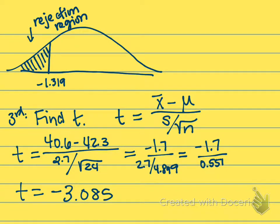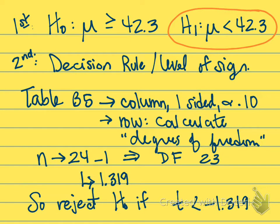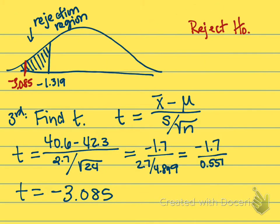If I chart this t on my distribution, that would be somewhere over here, negative 3.085. And so it is in the rejection region. We would actually reject the null hypothesis in this case. This would mean that the assembly time is less than 42.3 minutes. That was our alternate hypothesis - that the mean time actually ends up being less than what it used to be, which is a good thing in this case. We were hoping to have an assembly method that made us more efficient. Because we have rejected the null hypothesis, we have pretty closely proved that to be true.